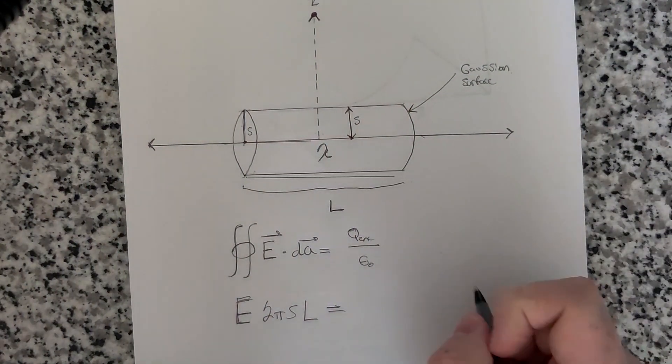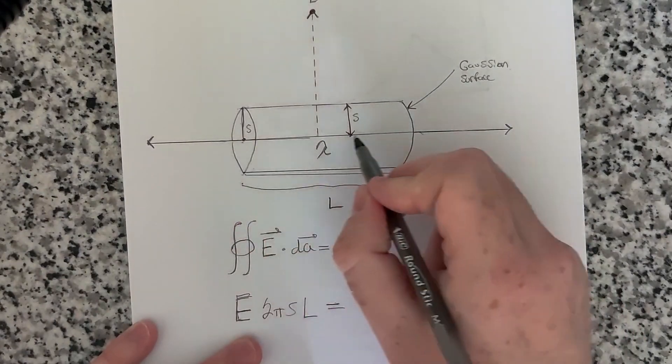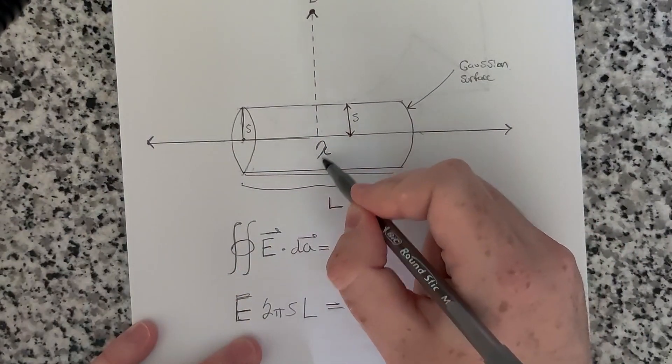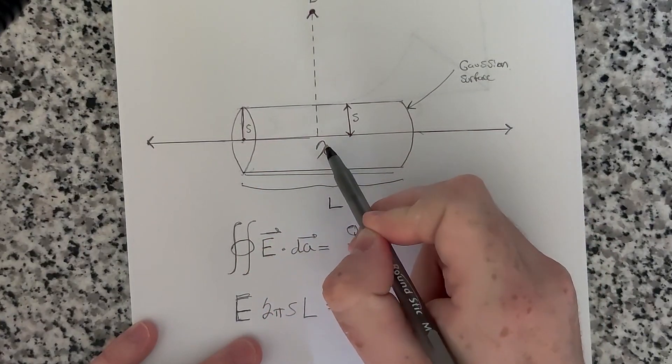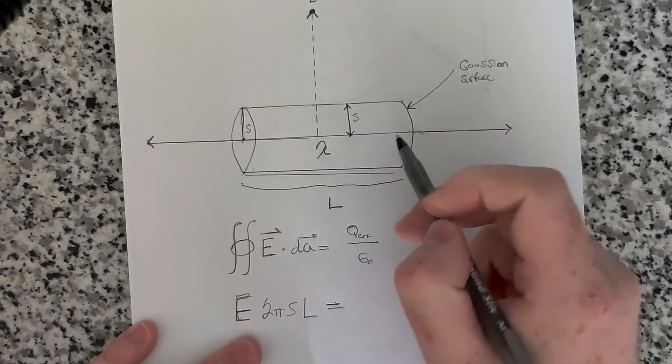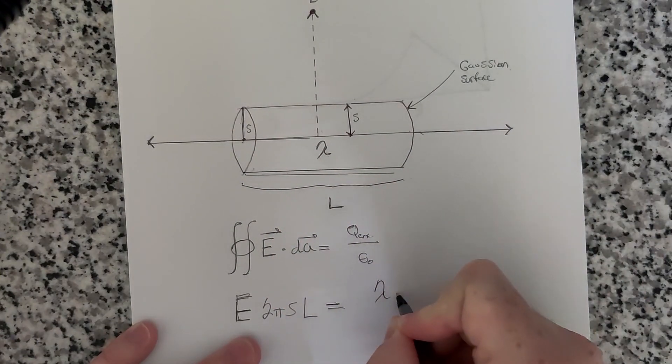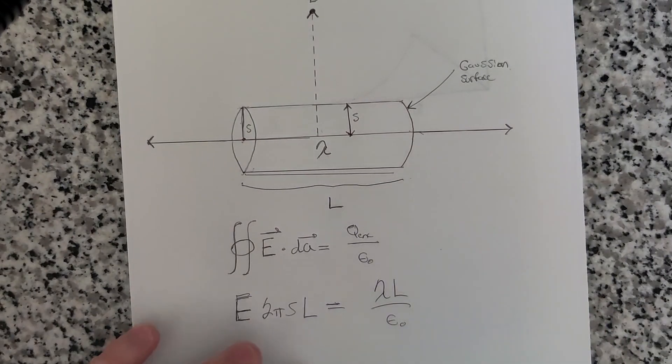And this is equal to the total charge enclosed. Well, we know that the whole wire has a uniform line charge density of lambda. And so that's charge per unit length. So we just multiply that by the length enclosed inside of our Gaussian surface, which is L. So that's lambda L. That's the total charge enclosed, divided by epsilon naught.